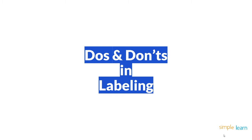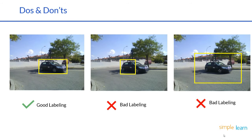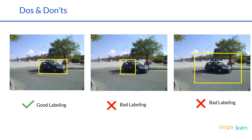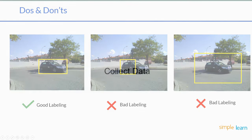Let's also look at the dos and don'ts of labeling. Labeling is one of the most important steps in data preparation. Good labeling means the bounding box completely covers the object, as shown in the left picture. Bad labeling examples include a bounding box that does not fully cover the object, or placing a bounding box in a region where the object is barely visible — this will mislead the model.